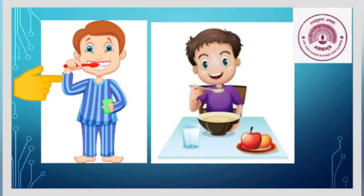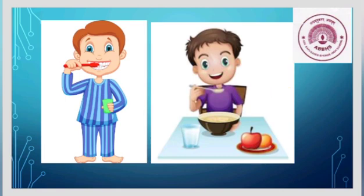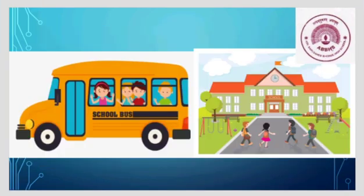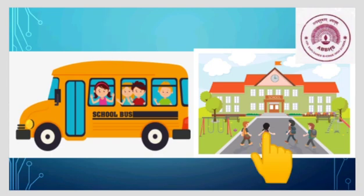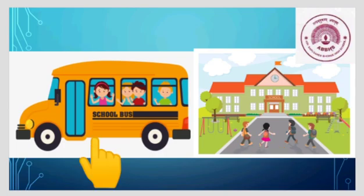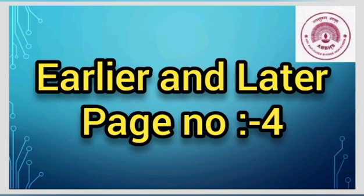Well, definitely first of all you brush your teeth and then you have your breakfast. Isn't it? So earlier you brushed your teeth, and having breakfast is the later process. Similarly, if I ask you which happened earlier and which happened later — travelling in the school bus and reaching the school — which happened earlier and which happened later? Definitely, first of all you travel in the school bus and then you reach the school. So travelling in the bus happened earlier and reaching school happened later. According to this, today we are going to learn about earlier and later.